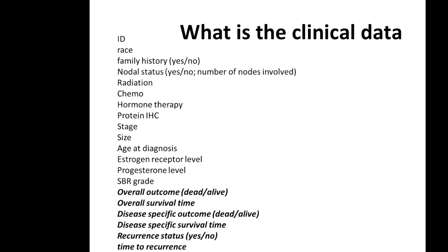There is also a very special type of clinical information that has something to do with time — time from diagnosis to recurrence, from surgery or other treatment to disease recurrence, or from onset of disease to patient death. This type of data is called survival data, and it requires special analytical approaches that we will learn about later in the module.